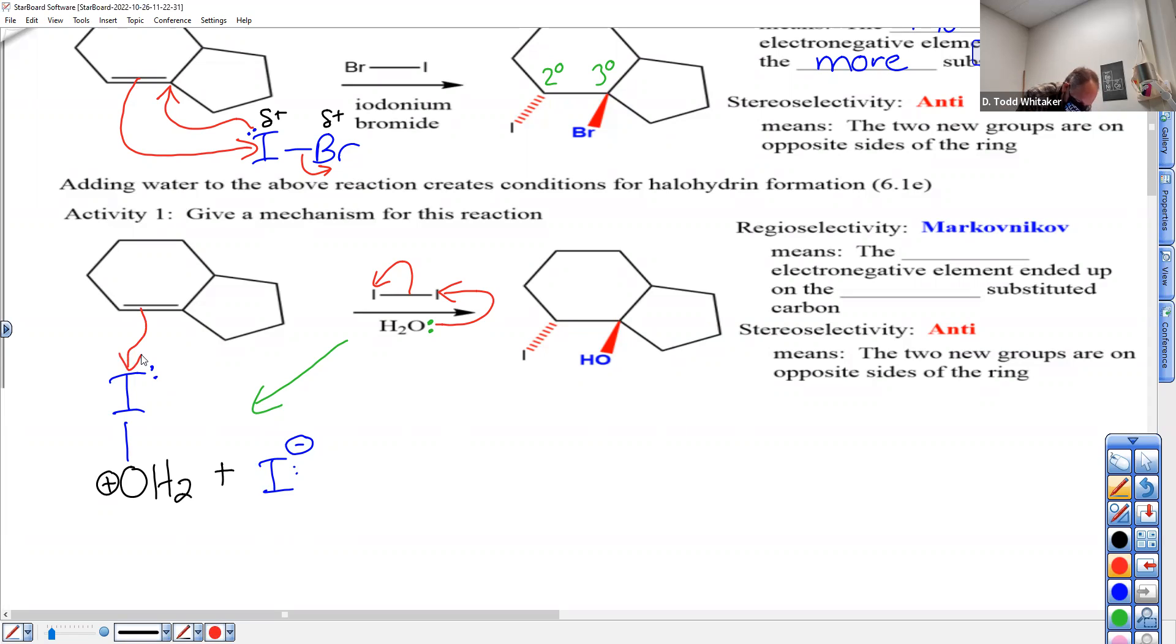This one below is more reactive than the one above because oxygen's even more electronegative than Br. So this one's going to happen lickety-split.